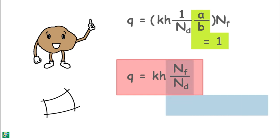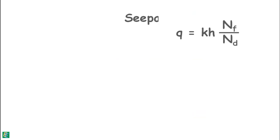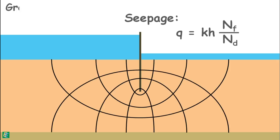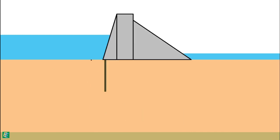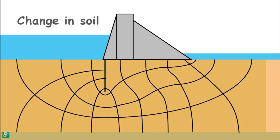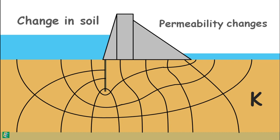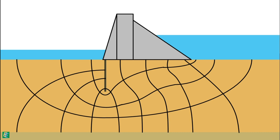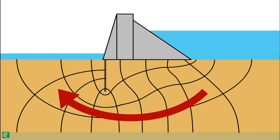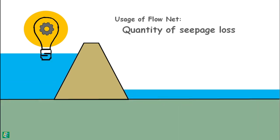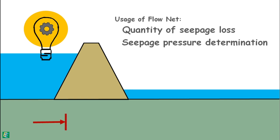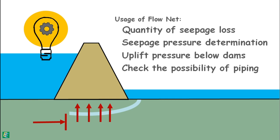The ratio Nf/Nd is called the shape factor. This is how we calculate seepage through soil under any structure using the flow net by the graphical method. For a given set of boundary conditions, the flow net is unique — it depends on boundary conditions, not on the soil type. If the soil changes, only the permeability k changes, not the flow net. The flow net also remains unchanged if upstream and downstream water levels are reversed — only the direction of flow reverses. We can use the flow net to find solutions such as estimating quantity of seepage losses from a reservoir, determination of seepage pressure, uplift pressure below dams, and checking the possibility of piping.